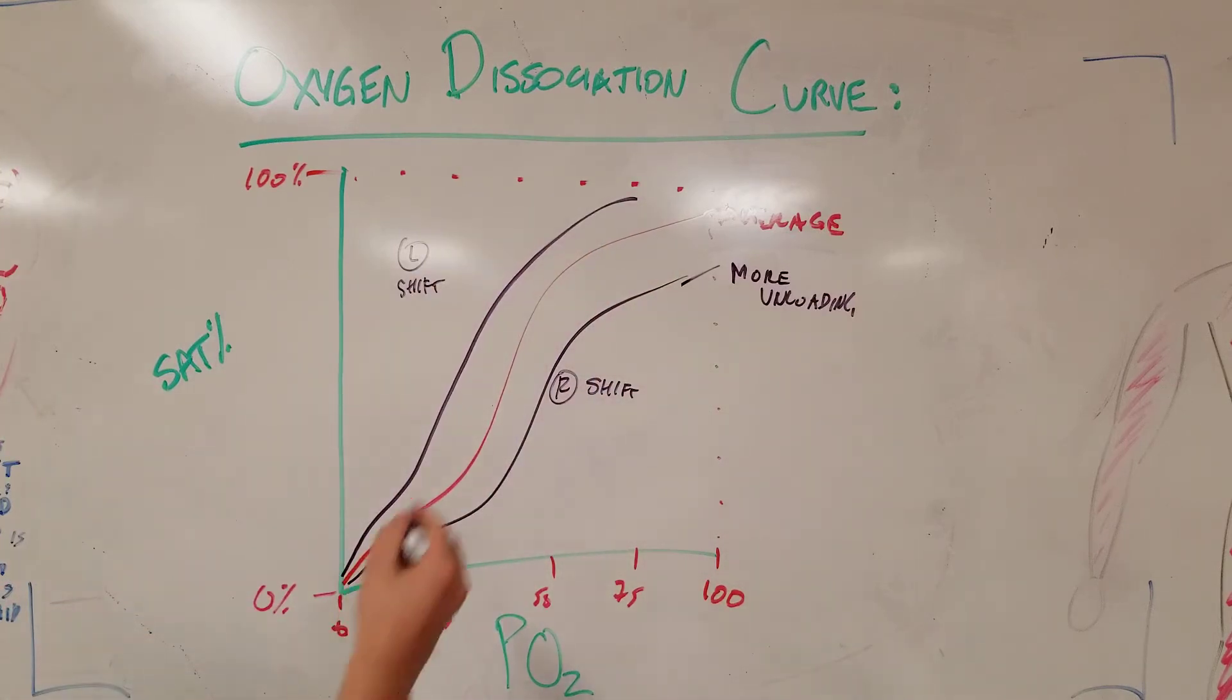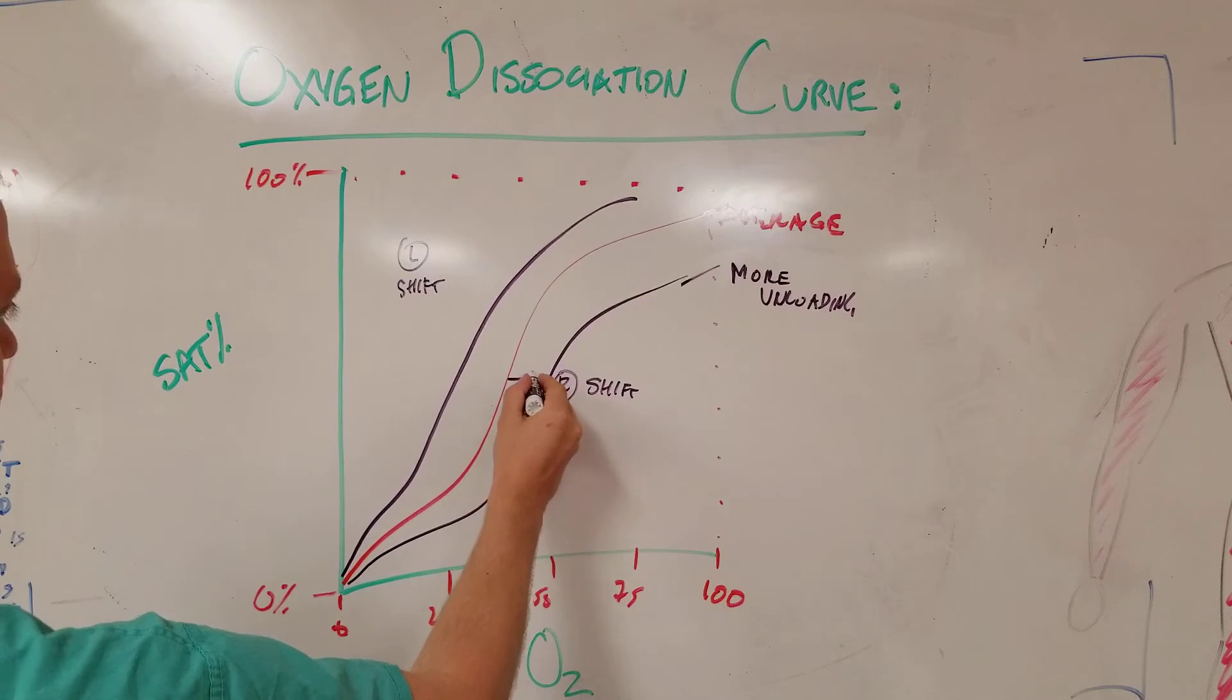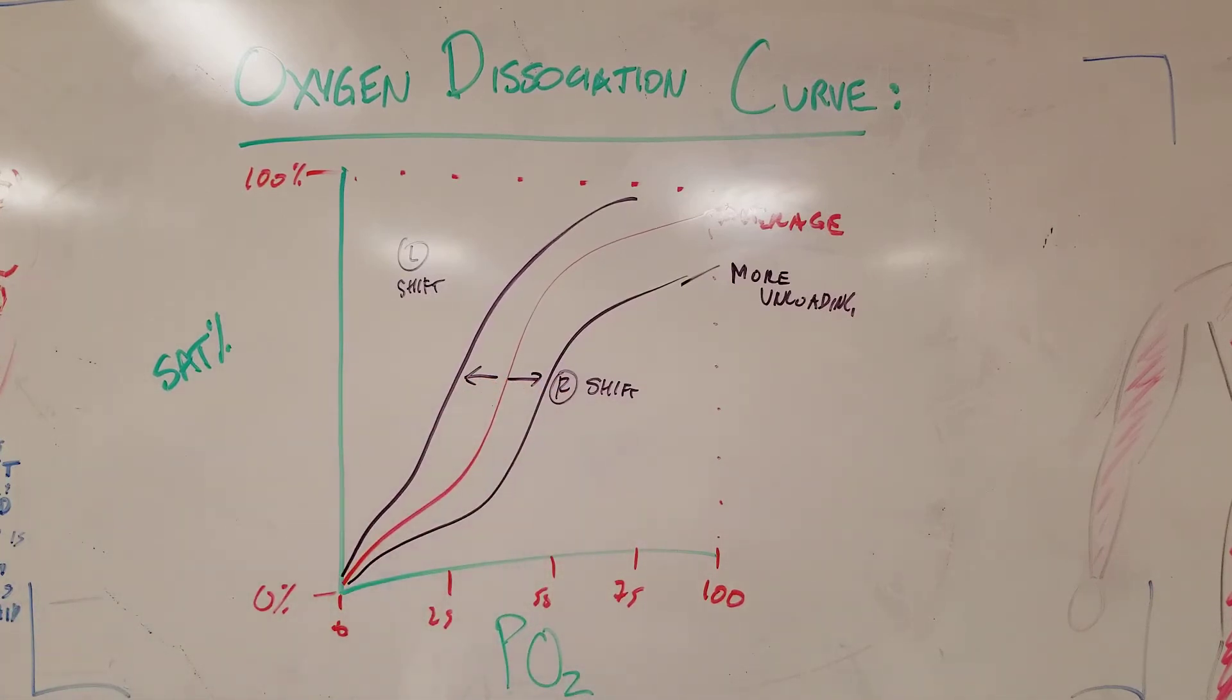Now, what causes this conformational change or these shifts to the right or to the left? And that is by the environment in the tissues. Now, the way to remember this, and this is the mnemonic, I'm sure this is why you're here.